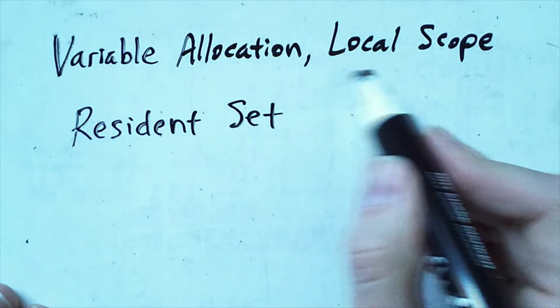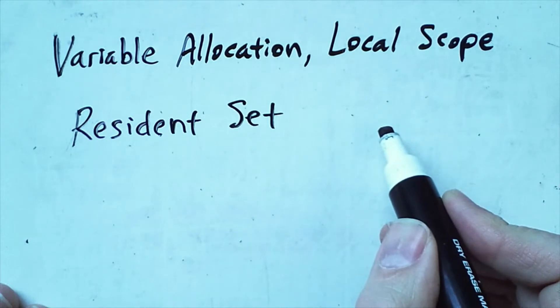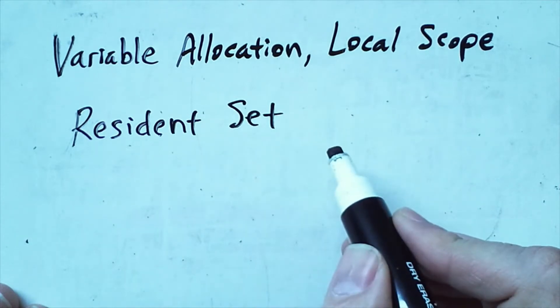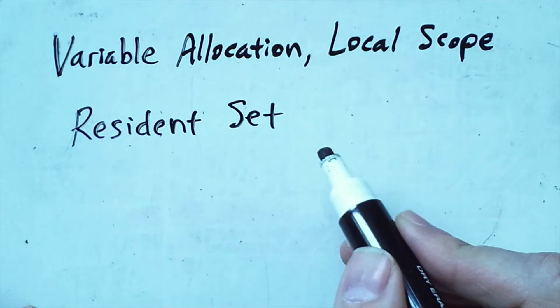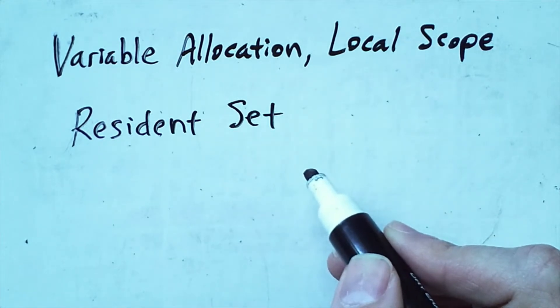Because we have variable allocations, the size of the residence set can change. Managing the size of this residence set has to be done deliberately over the course of the execution of the process. Whenever a page fault occurs, because we are using local scope.